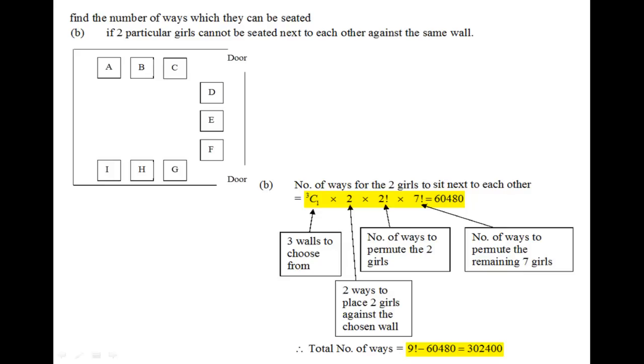Therefore to answer the question, I need to use the complementary method, which is the total number of ways, nine factorial, minus away the total number of ways which we have just found, the two girls sitting next to each other, giving us 32,400.